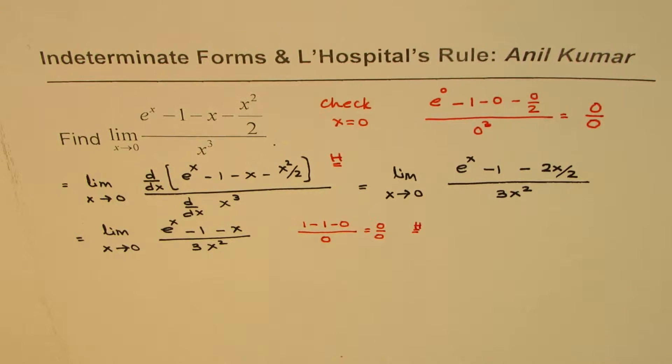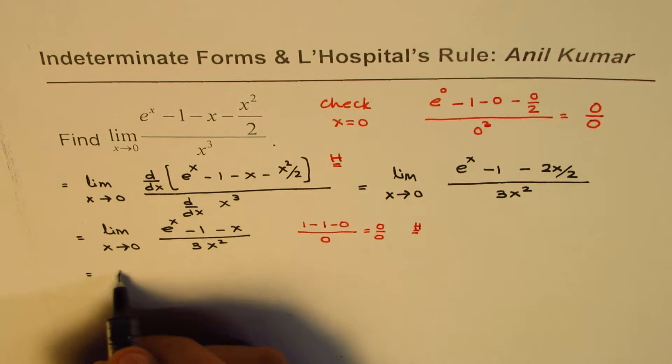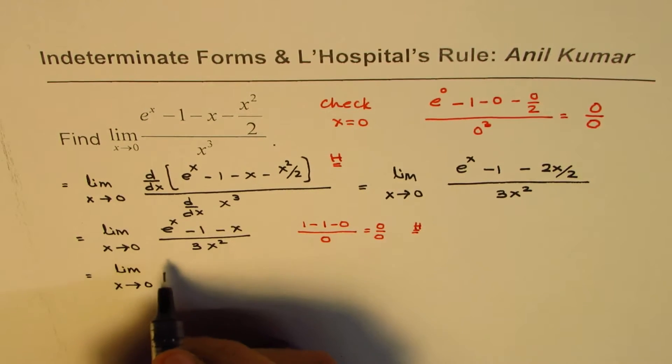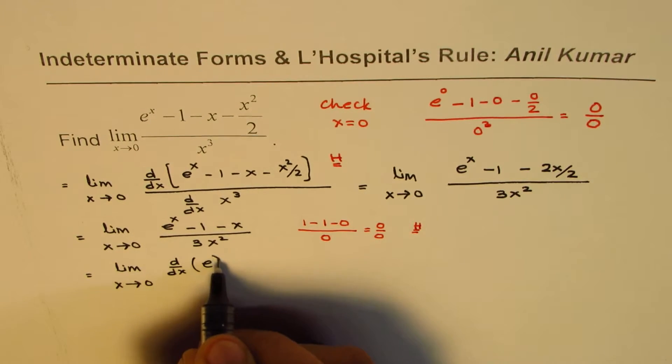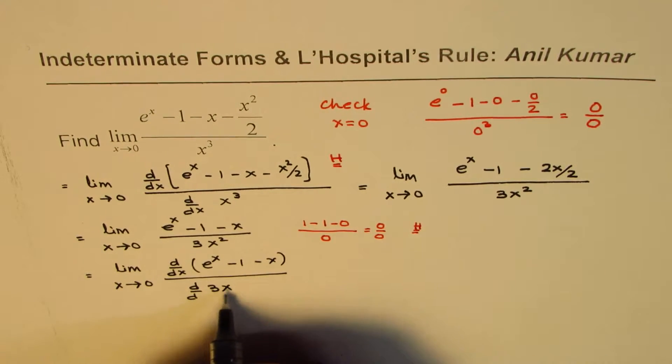So I'll again apply L'Hospital's rule in this particular case. And so we can write this as limit x approaches 0, derivative of numerator, which is e to the power of x minus 1 minus x, divided by derivative of denominator, which is 3x square.